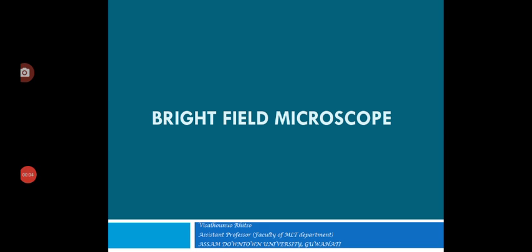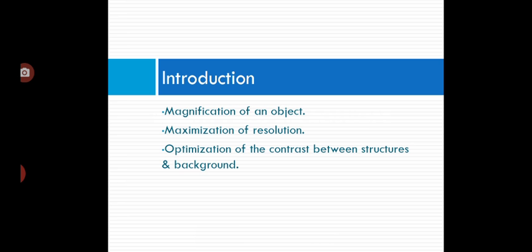Hello everyone, in this video I'll be explaining the topic of bright field microscopy. This bright field microscope is an optical microscope which is most commonly used in the lab. The resolution power of an unaided eye is about 200 micrometers.